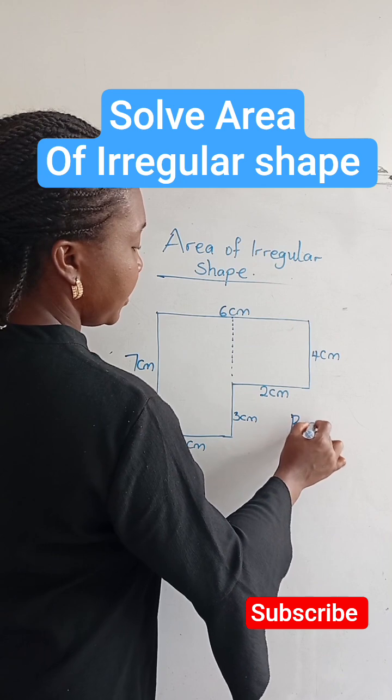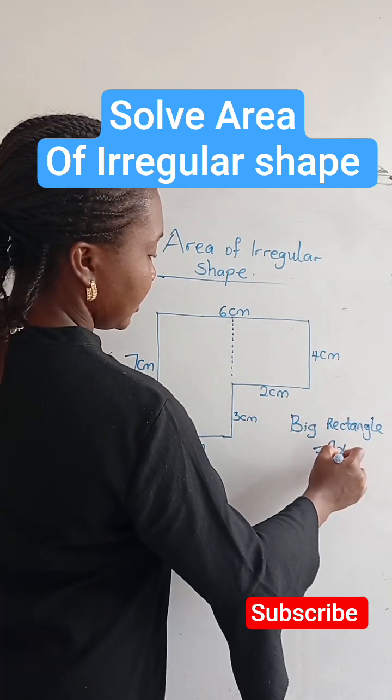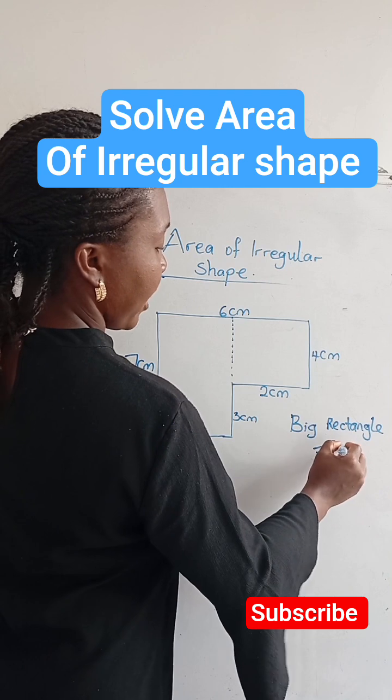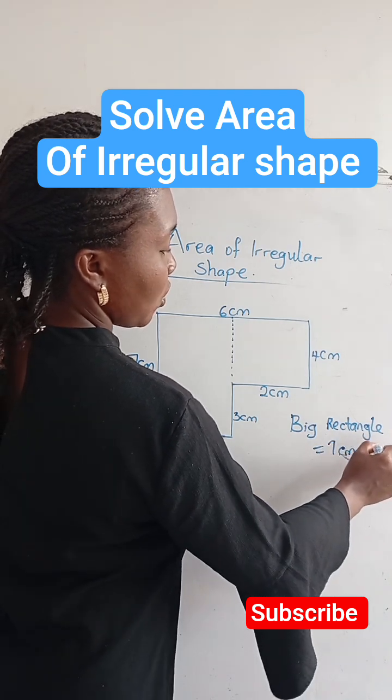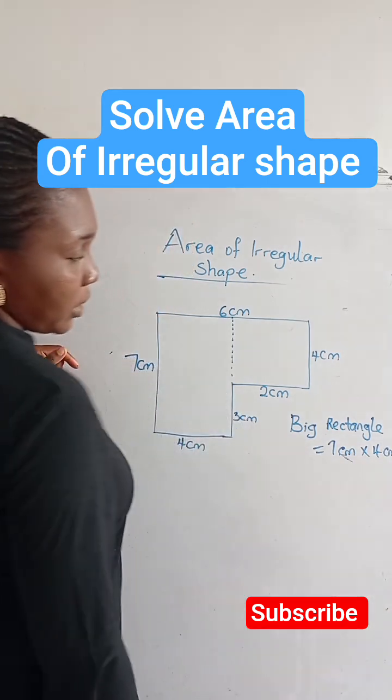So for the big rectangle, we have 7 centimeters times 4 centimeters, and that gives us 28 centimeters squared.